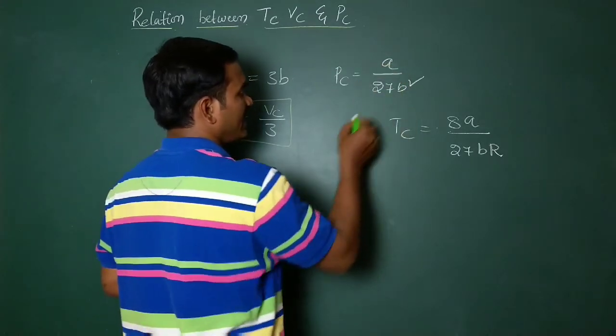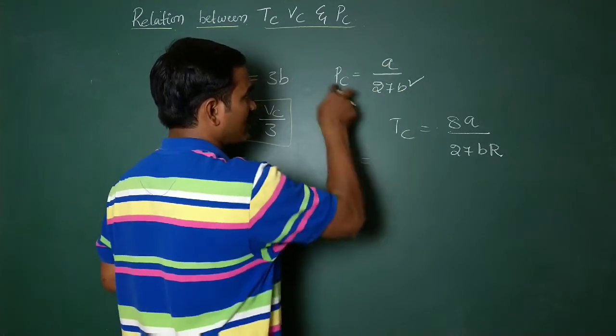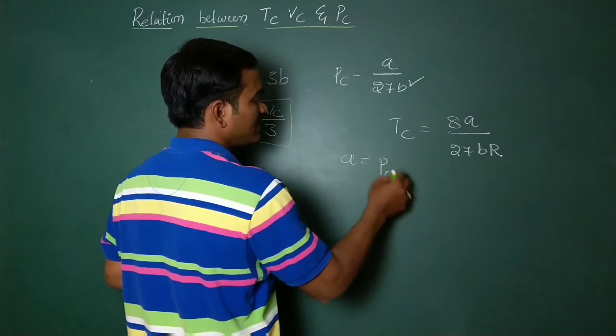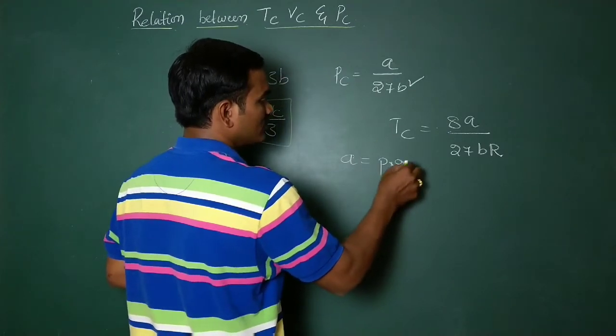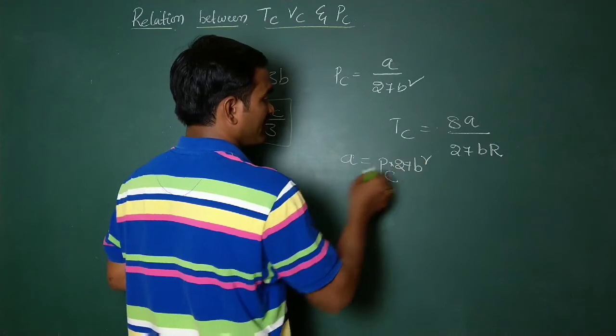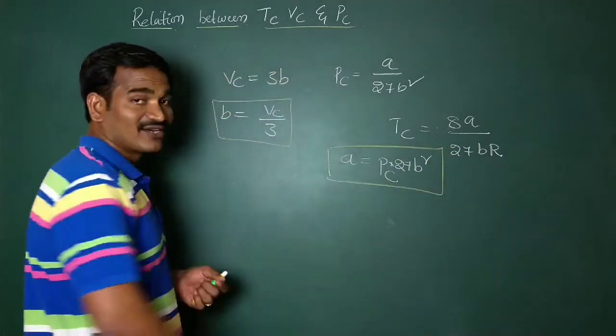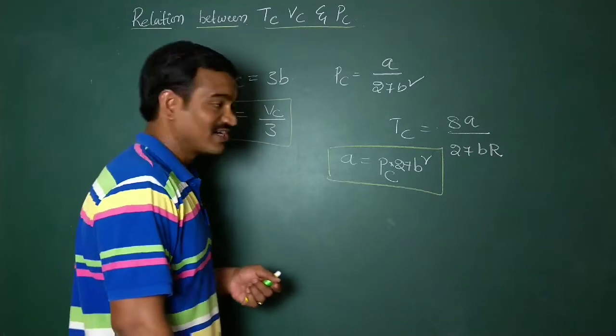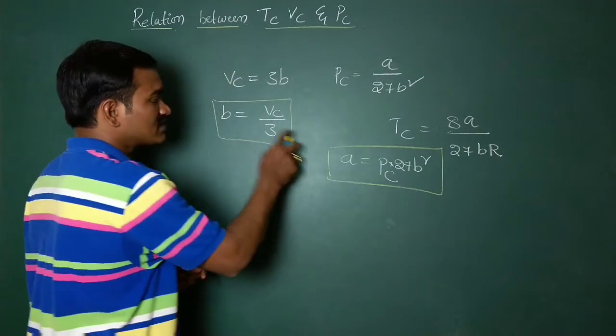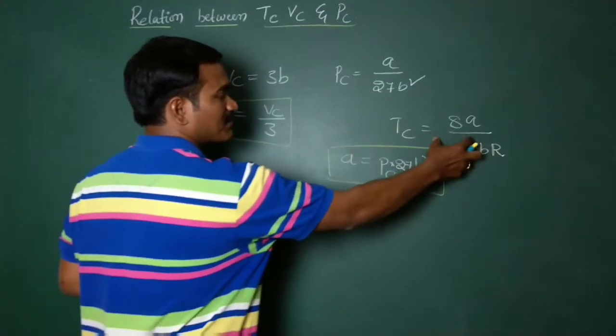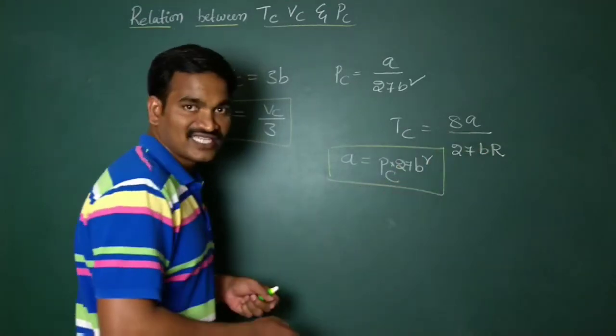You take A, what is A equal to? I am writing like this: A equals Pc into 27B square. You know very well, I am writing all constants. Have you got it all? Now, this A value and B value you substitute in this formula, that is Tc formula.